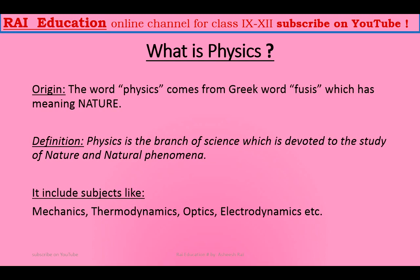What is physics? The word physics comes from the Greek word 'physis,' which means nature. So, easily we can define physics as: Physics is the branch of science which is devoted to the study of nature and natural phenomena. In physics, we study about nature and natural phenomena like gravitation — gravitation is a natural phenomenon by virtue of which a body is always attracted towards the earth.